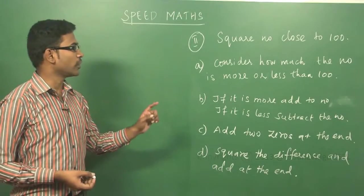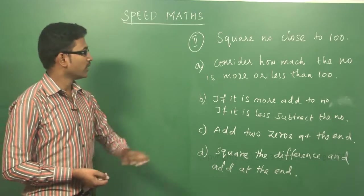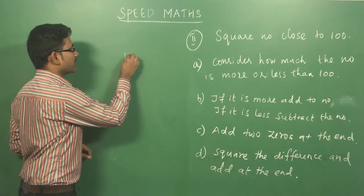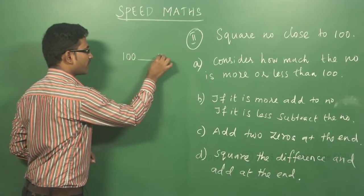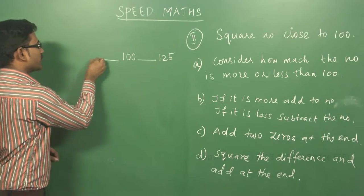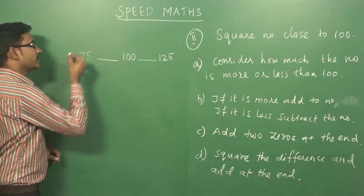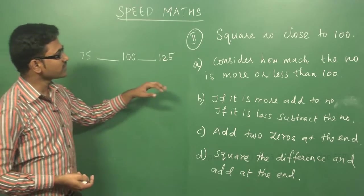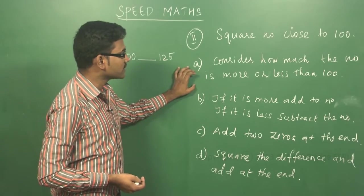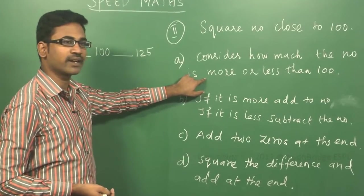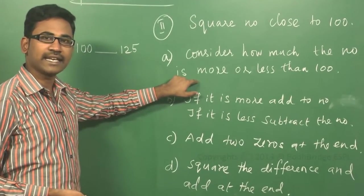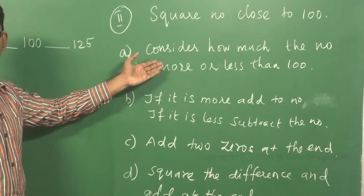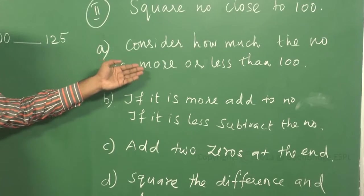The next topic is square numbers close to 100. You take a set of numbers for which this method is applicable: from 100 up to 125 on one side, and down to 75 on the other. When a number is given, you have to consider how much it is more or less than 100. For example, if it is 98, it is minus 2 — that is, 100 minus 2. If it is 107, it is plus 7, more than 100.